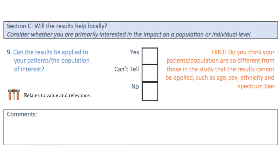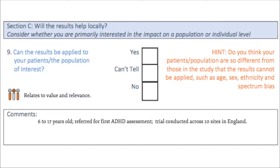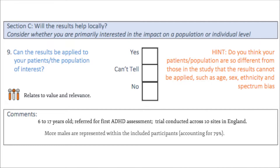Are your patients or population so different from those in the study that the results cannot be applied — such as differences in age, sex, ethnicity, and spectrum bias? This takes us back to the initial question of the spectrum of participants included. Based on the study's inclusion criteria, participants were aged 6 to 17 years old and referred for their first ADHD assessment, with the trial conducted across 10 child and adolescent mental health services and community paediatric clinic sites in England. If used in the UK context, this trial presents greater ecological validity and generalisability due to its pragmatic nature. We can see from the study's socio-demographic characteristics that more males are represented, accounting for around 79%, which may reflect the current understanding that ADHD is more common in males than females.